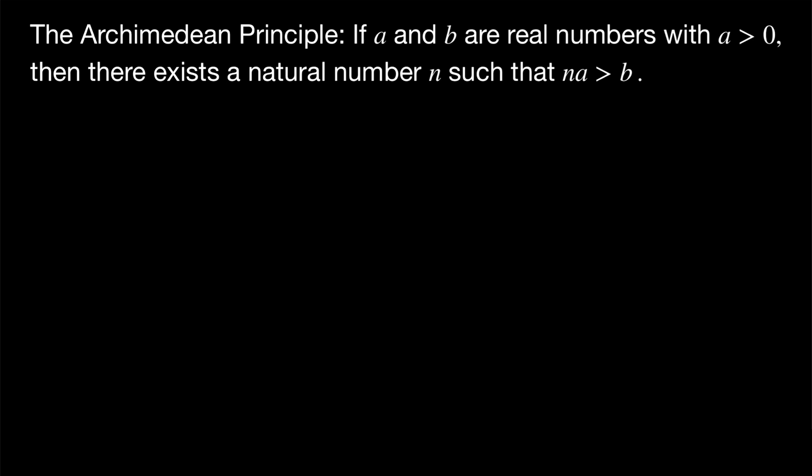Quickly, we're going to reformulate what we're trying to prove, which will make the proof easier. Certainly, if N times A is greater than B, that's the same as saying that N is greater than B divided by A, just dividing both sides of this inequality by A, which we know we can do with no complications because A is positive. Now, what is B over A? Well, B over A is just a real number.